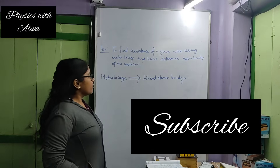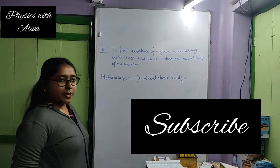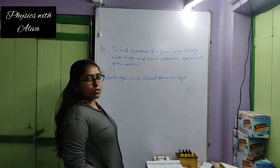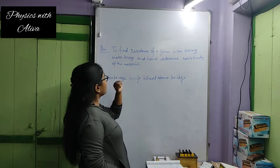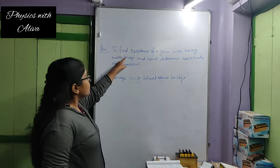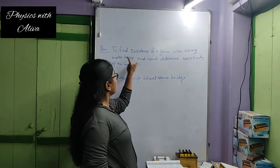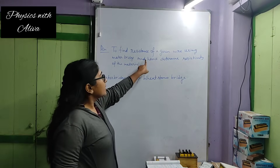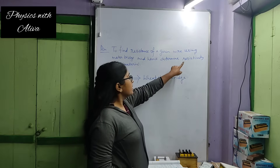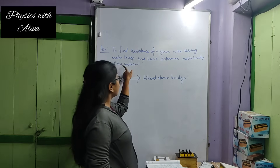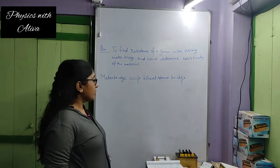Hello everyone. Today we will discuss another practical of class 12. The aim of the practical is to find the resistance of a given wire using meter bridge and hence determine the resistivity of the material.